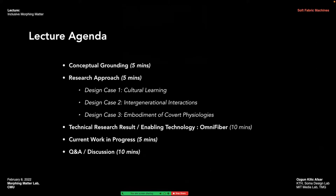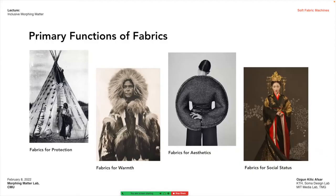Today I'll be presenting hopefully some inspiring work in a brief lecture titled 'Shaping and Being Shaped by Fabric Machines.' My lecture builds on five main sections: I start with a conceptual grounding of my work, then briefly discuss my combinatory approach for HCI research, provide three design exemplars, present the enabling fiber technology, and towards the end share some current progress before opening for Q&A.